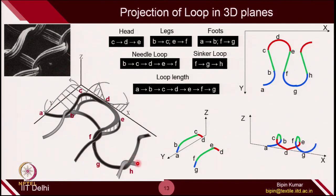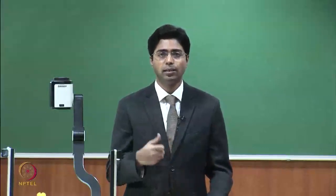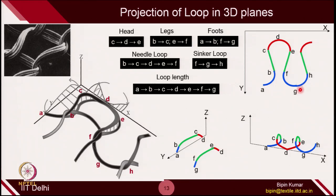Now we can see how the yarn is actually bent inside the fabric — it is not just a 2D loop, but also bends in the Z direction, which gives it a different nature of recovery. This is why the fabric curling is different on different sides. Let's see why the nature of wale curling and course curling is different from the edges.